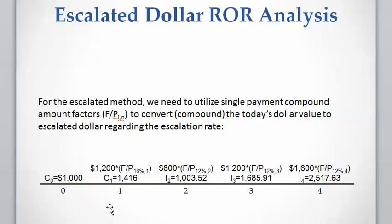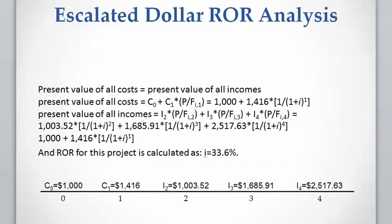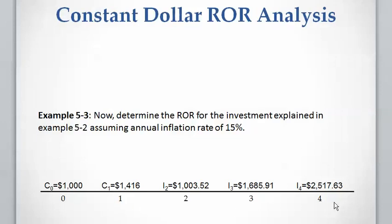The result gives us the escalated cash flow as shown here. To calculate the rate of return for this escalated dollar cash flow, we again write the equation: present value of costs equals present value of income. We have two costs — a thousand dollars and fourteen hundred sixteen dollars — which are the escalated dollar cash flow values. We have three incomes at years two, three, and four. Solving this equation for i, we calculate the escalated dollar rate of return as 33.6 percent.